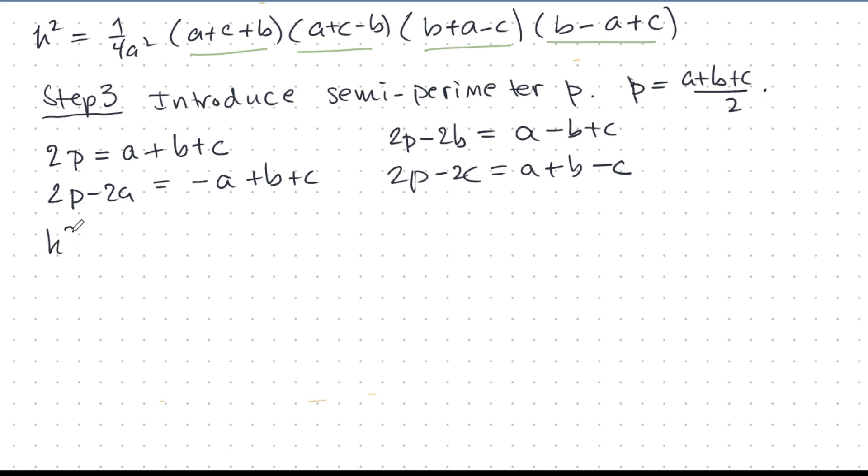So, now I can write H squared equals 1 over 4A squared. And here is 2P. That's this one. Now, the next one, this is 2P minus 2B here. And then, the next one, this is 2P minus 2C. And then, this one is 2P minus 2A.